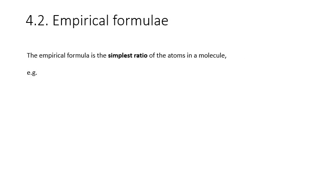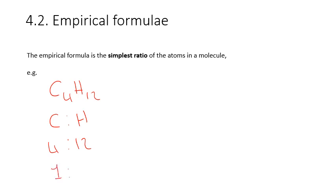We've seen empirical formulae before in a previous video, where we looked at how to calculate empirical formulae along with percentage yield. For this specification point, we need to know how to deduce empirical formulae from molecular formulae. For example, if I give you the molecular formula of butane, C4H10, we need to figure out the simplest ratio between the carbons and the hydrogens. We have four carbons and 10 hydrogens. Dividing both sides by four simplifies down to one to three. Therefore, the empirical formula of butane is CH3.